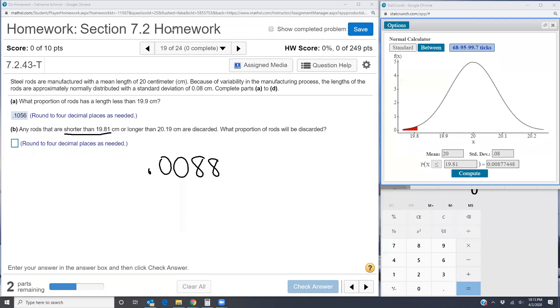Now I want the proportion that is longer than 20.19. So longer is going to be a greater than or equal to. I switch to greater than or equal to. I put in my 20.19.